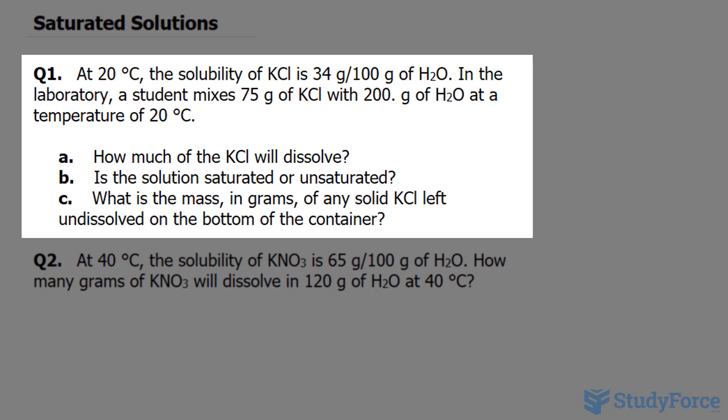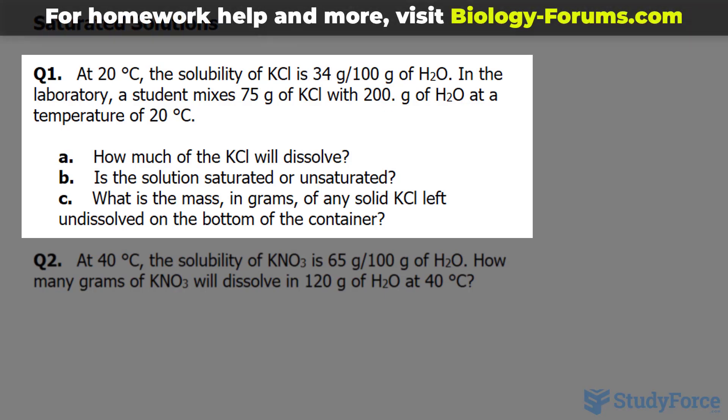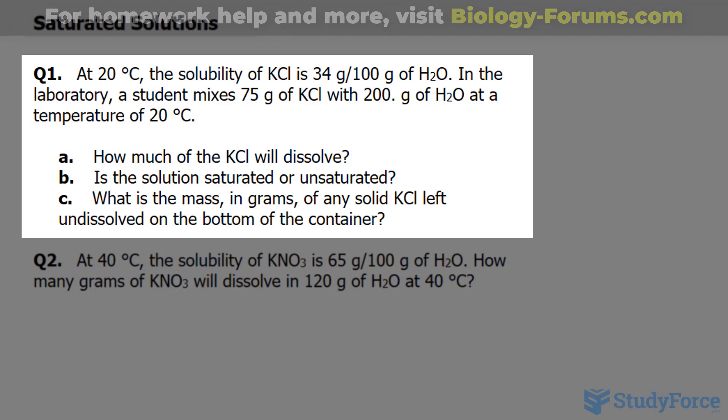Question 1 reads: At 20 degrees Celsius, the solubility of potassium chloride is 34 grams per 100 grams of water. In the laboratory, a student mixes 75 grams of potassium chloride with 200 grams of water at a temperature of 20 degrees Celsius.